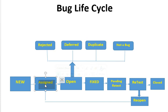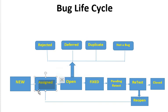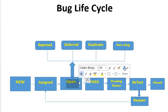The next stage is Assigned. After a bug is created in the bug tracking tool, the QA lead or manager allocates it to the development team or to an individual developer for further analysis. At this stage, the bug moves to the Assigned state.